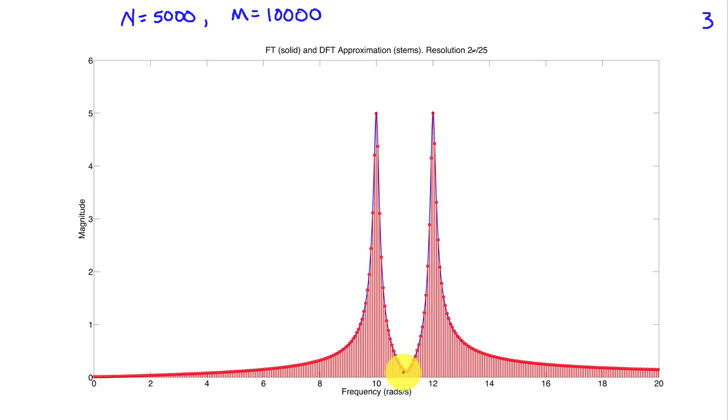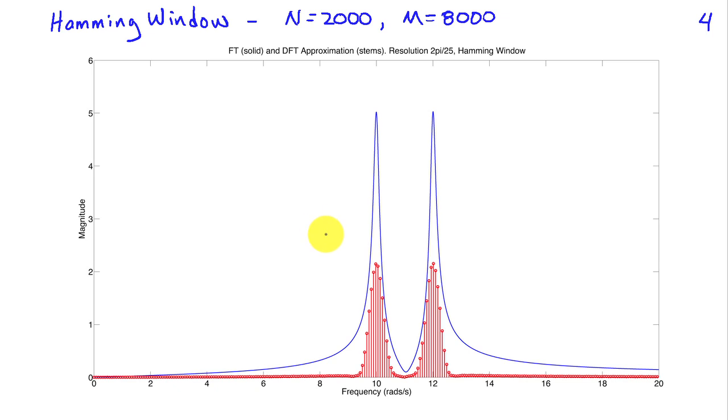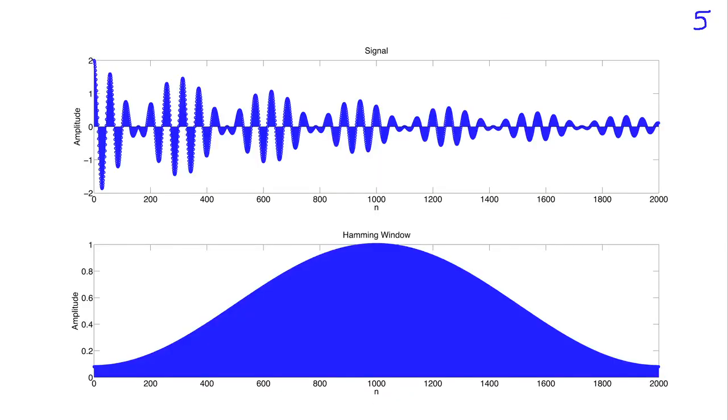Before we conclude this example, I want to consider what happens when we window using something other than the rectangular window. Here I'm going to show the result with a Hamming window. The width of the main lobe of a Hamming window is twice as wide as that of the rectangular window. So to get the same resolution, we need to double the number of points. We took n equal to 2,000 here. This approximation doesn't follow the true Fourier transform nearly as well as the rectangular window approximation. That's in part because of the transient character of the signals involved. We're losing energy when we do the window, and that energy is differentially lost near the beginning. As you can see in this display where I'm showing the sample signal in the top panel and the Hamming window for 2,000 points in the bottom panel.